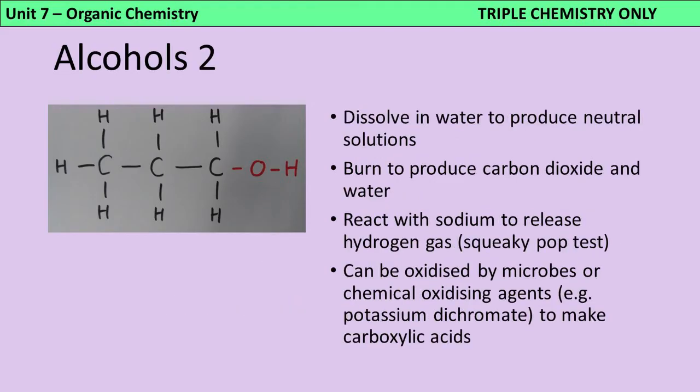Alcohols dissolve in water to produce neutral solutions. Now that can come as a little bit of a surprise to people because again they see OH and they think, oh, that makes it an alkali, but the OH of an alcohol isn't going to break off and be an ion, so it's not going to make a solution alkaline. In terms of chemical reactions, alcohols again will burn or combust in oxygen to produce carbon dioxide and water. They react with sodium to release hydrogen gas, and you can test for that with your squeaky pop test, where you ignite it and it burns really rapidly and makes a pop sound, and they can be oxidized either by microbes or by chemical oxidizing agents like potassium dichromate or potassium permanganate to make carboxylic acids, which are weak acids.